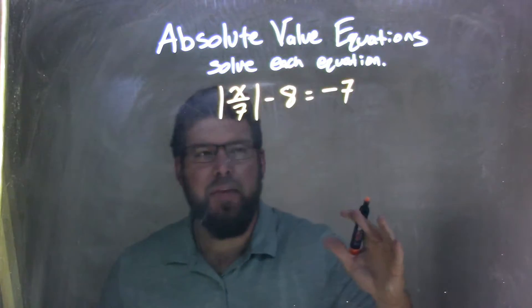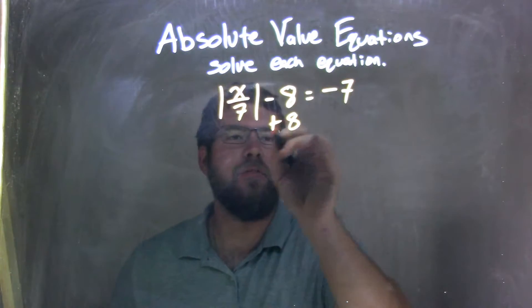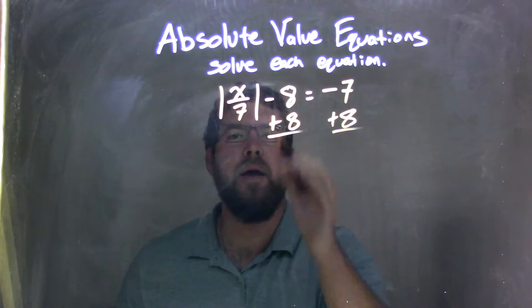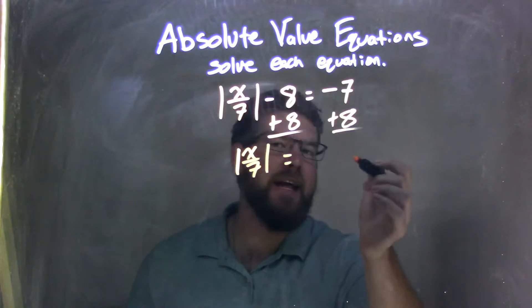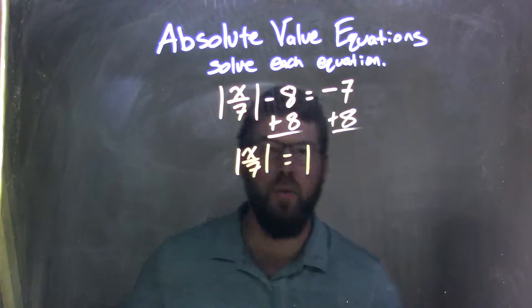First step, isolate the absolute value. I'm going to add 8 to both sides. In doing so, I'm left with the absolute value of x over 7 equals negative 7 plus 8, which is a positive 1.